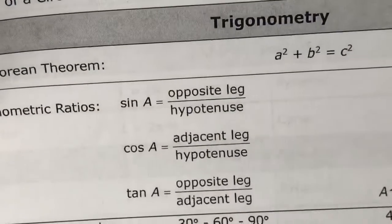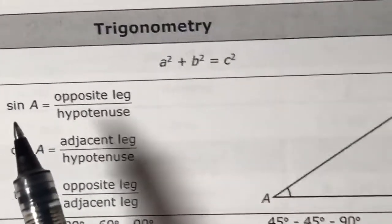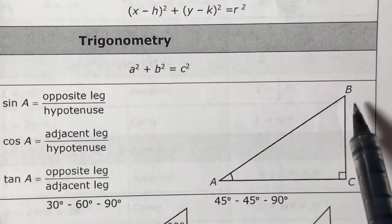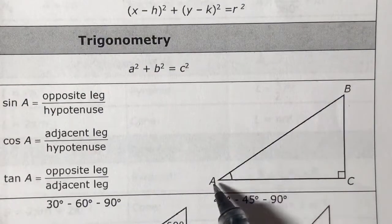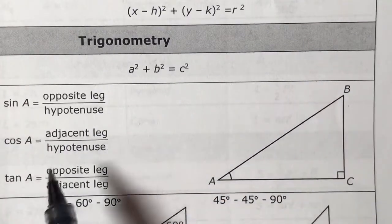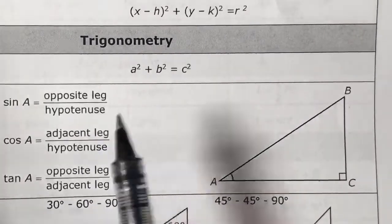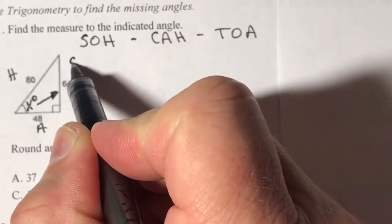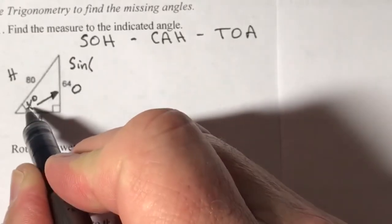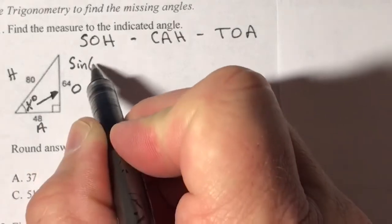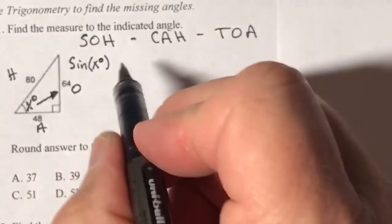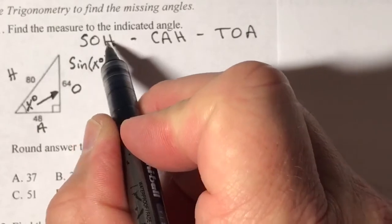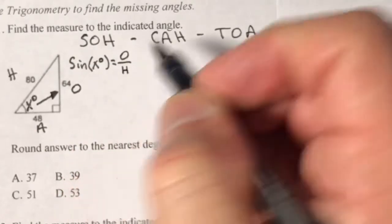From the referenced angle, the opposite and hypotenuse sides are identified. We write sine, abbreviated as sin, with parentheses around the angle you're finding. Don't forget the degree symbol — I'll remind you how to enter that in the calculator. That expression always equals opposite divided by hypotenuse.